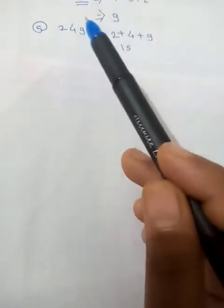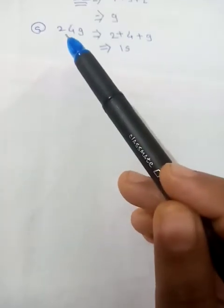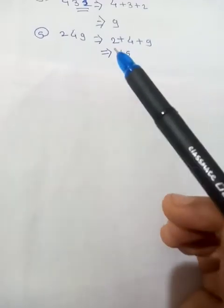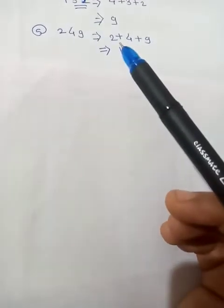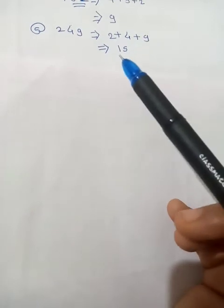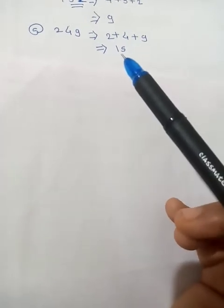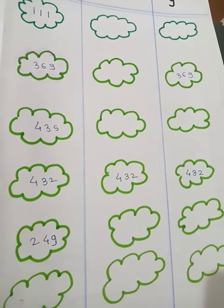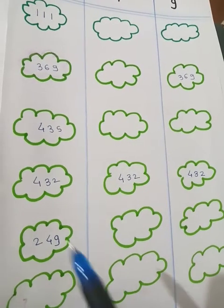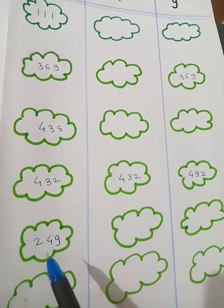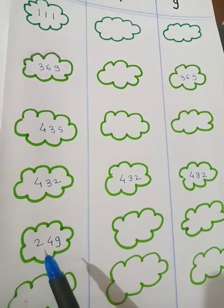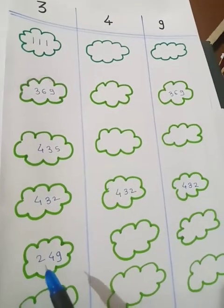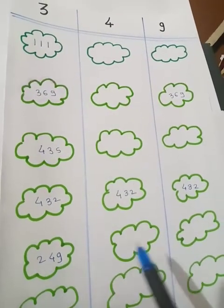The next number is 249. The sum of digits is 2 plus 4 plus 9, which equals 15. This number is divisible by only 3. So, 249 goes in only the column divisible by 3, not by 4 and not by 9.